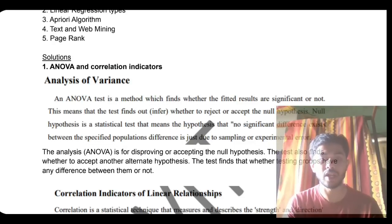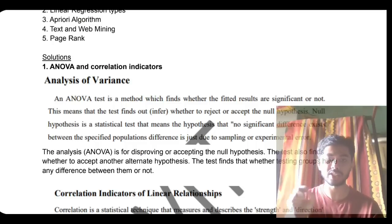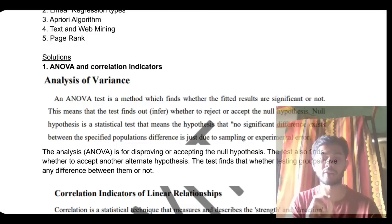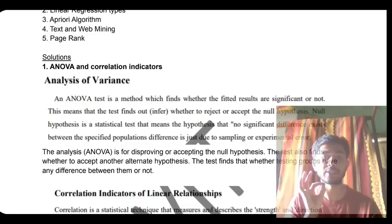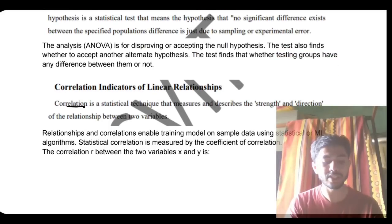After that, write about correlation indicators. Correlation describes how much two things are related to each other. Positive correlation means if one thing increases, the other also increases. Negative correlation means if one increases, the other decreases. Nonlinear correlation means the change in one factor does not depend on the other increasing or decreasing. These are the three types of correlation.